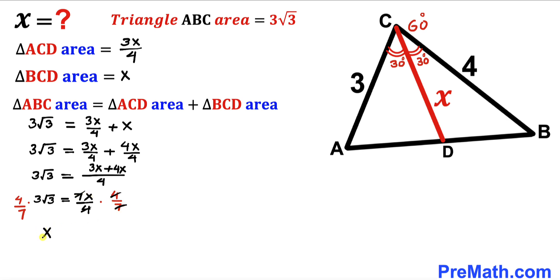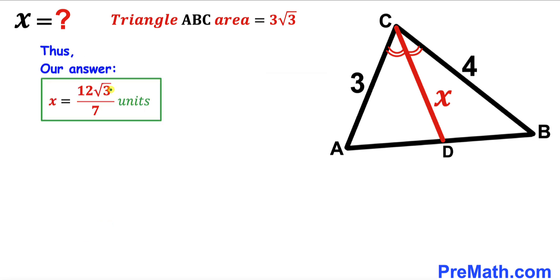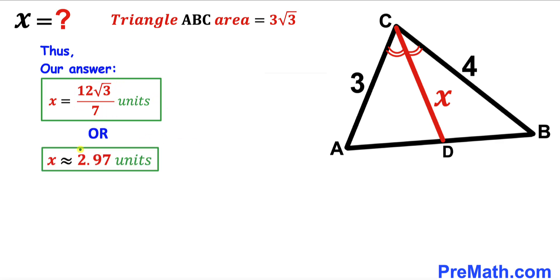So our X value equals 12 times square root of 3 divided by 7 units, which is approximately equal to 2.97 units. And that is our final answer.